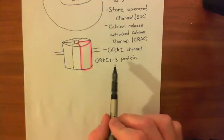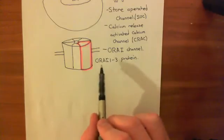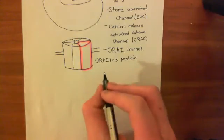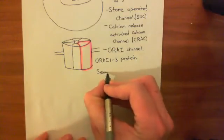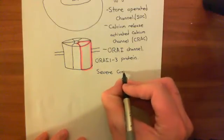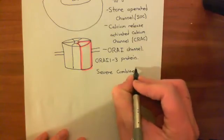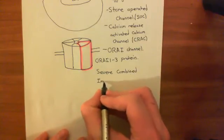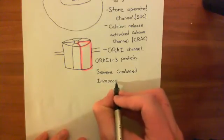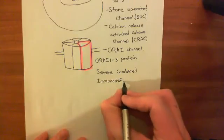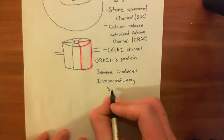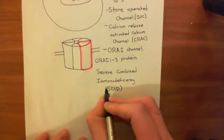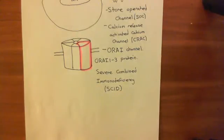These Orai-1 proteins were discovered by someone looking at children with a very rare genetic disease known as severe combined immunodeficiency. It is always children who suffer from it because they don't survive to adulthood, so you only see children with this disease. By studying these children with severe combined immunodeficiency, often abbreviated to SCID, the discovery was made.